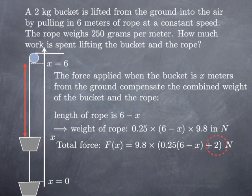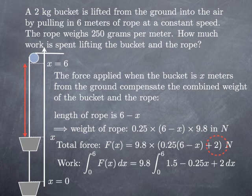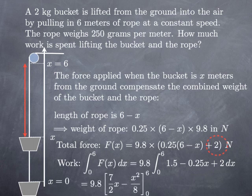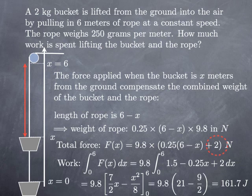According to the integral formula we just established, the work required to lift the bucket and the rope is the integral from 0 to 6 of this variable force F(x). The 9.8 is a multiplicative constant, so it's 9.8 multiplied by the integral from 0 to 6 of 1.5 minus 0.25x plus 2. When I integrate, I get 7/2 x minus x²/8. We evaluate that between 0 and 6, and multiplying by 9.8, we obtain 161.7 joules.